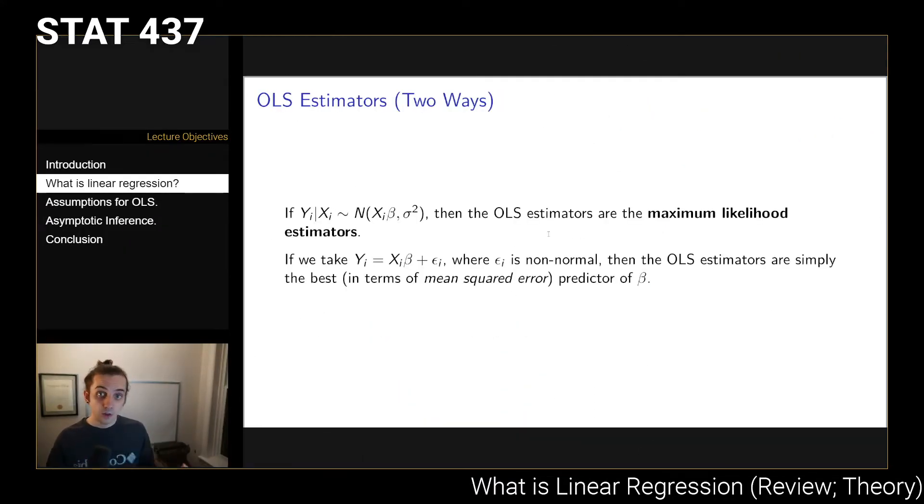The OLS estimators can be viewed in two different ways. Either we can assume that the distribution of our outcomes is normal conditional on the covariates that we care about, and if we assume that and assume that the mean is correctly specified, then we can view the OLS estimators as though they are maximum likelihood estimators for the quantity beta.